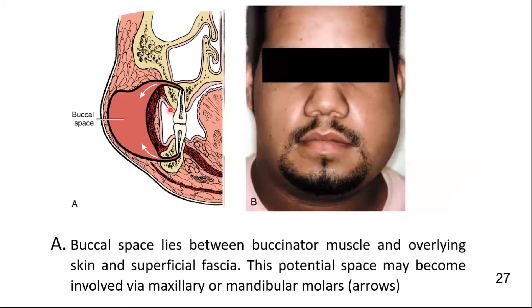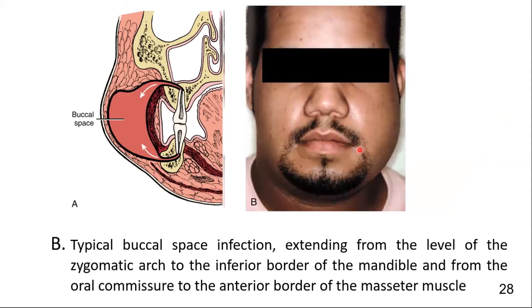Here you can see a clinical picture of a buccal space infection. The buccal space lies between the buccinator muscle and the overlying skin and superficial fascia. This space may become involved via maxillary or mandibular teeth. The typical buccal space infection extends from the level of the zygomatic arch down to the inferior border of the mandible.